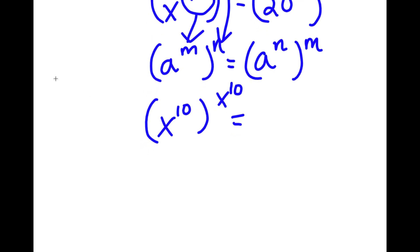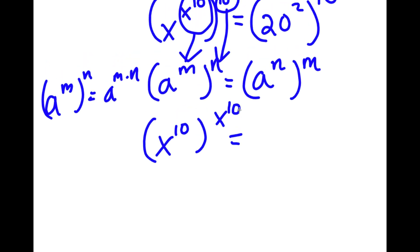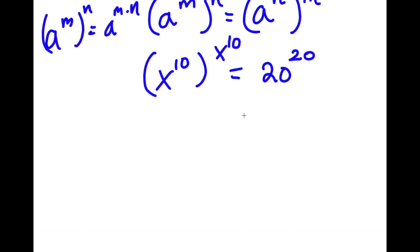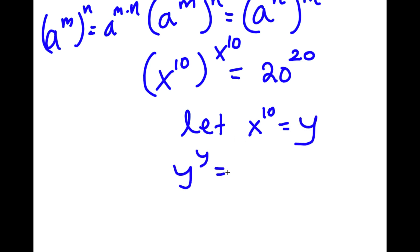Also, if I have something in the form a to the power of m to the power of n, this is equal to a to the power of m times n. So this is the same thing as 20 to the power of 2 times 10, which is 20 to the power of 20. Now, I'm going to let x to the power of 10 equal to the variable y.